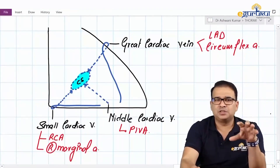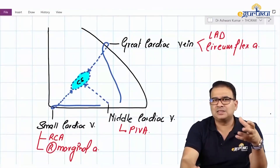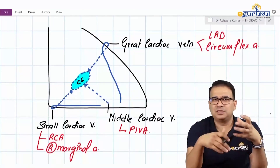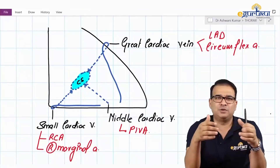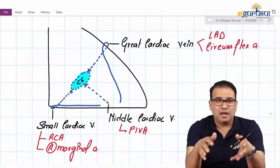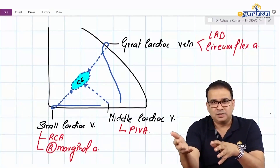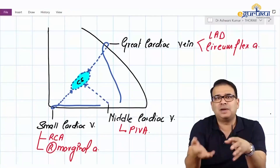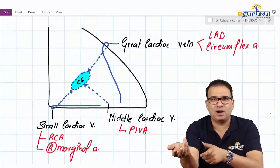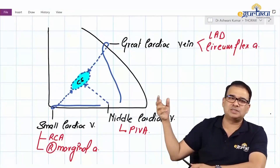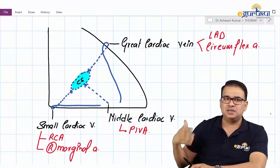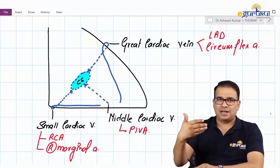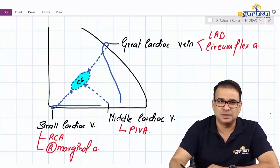Clinically, questions on tributaries of the coronary sinus are often framed as: a patient is bleeding from a vein accompanied by a certain artery — you need to identify the vein from the artery, or vice versa. So it's very important to understand arteries and veins together, and it's easier when viewed from the same anterior aspect used when discussing the arteries.